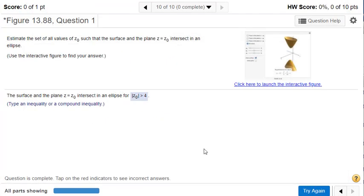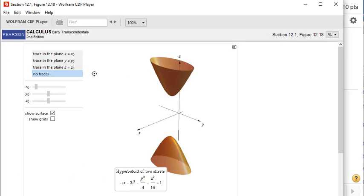And of course we can't finish without showing off the incredible 3D imagery in these interactive figures. In this particular case, the students are asked to find the set of all values where the plane z equals z naught intersects in an ellipse. So take the z naught plane and adjust it up and down to see where we are going to create ellipses.